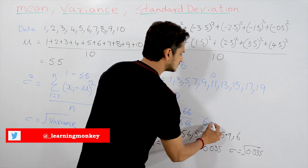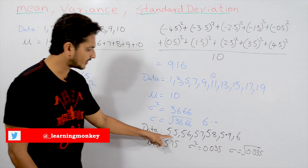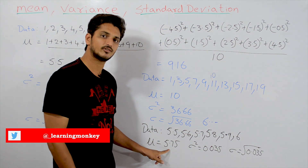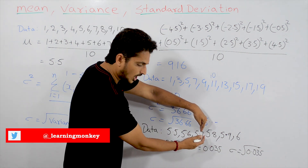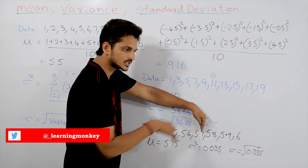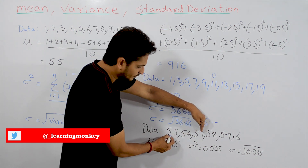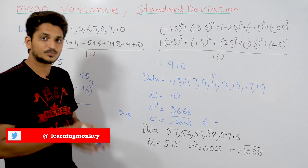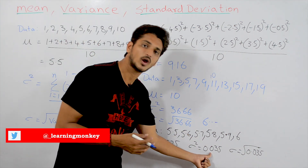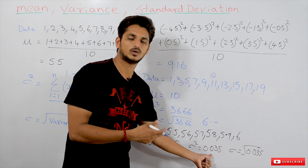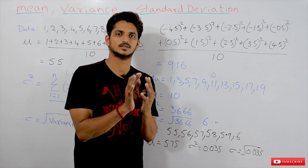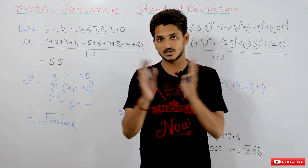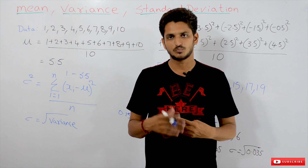Take one more example: data = 5.5, 5.6, 5.7, 5.8, 5.9, 6. The mean value is 5.75. From 5.75, how much is the data spread? The largest spread is up to 5.5, which is only about 0.25 — the spread is very small. That is why the variance value is just 0.035. As the spread increases, variance increases; here the spread is small, so the variance is small.